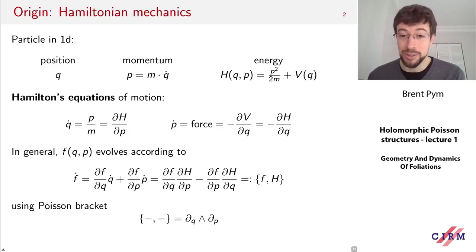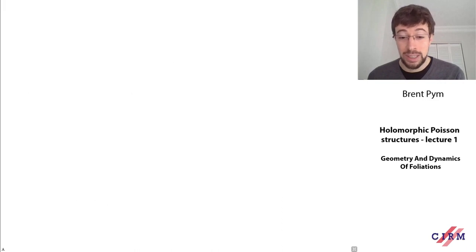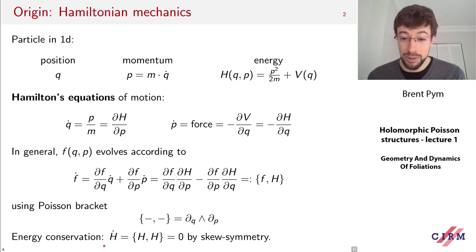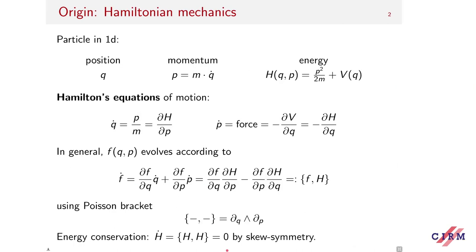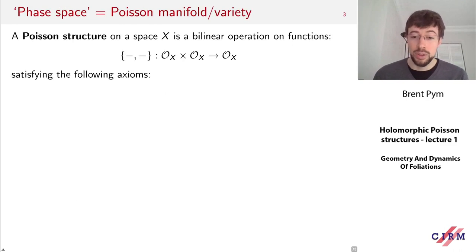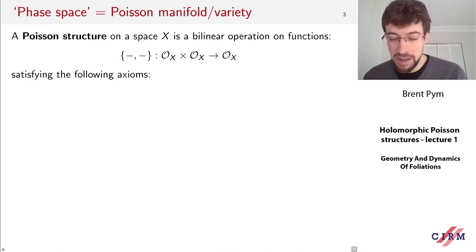One nice thing about using the Poisson bracket is that it gives us a one-line proof that energy is conserved as the system evolves. If I look at the time derivative of the energy, from this calculation that's the same as the bracket of H with itself, but the bracket is skew-symmetric, so that's zero. So that was the very first example of a Poisson bracket that was ever found.